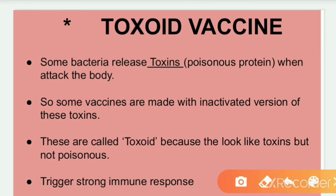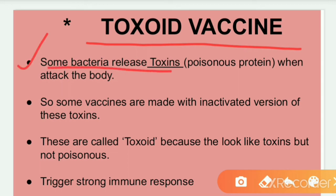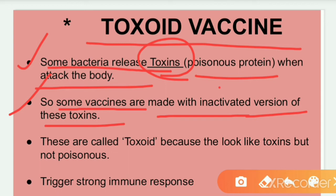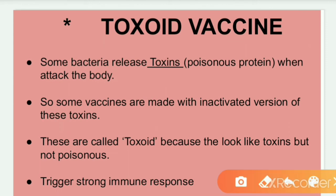Now let's talk about toxoid vaccines. The name suggests it is related to toxins. Some bacteria release toxins — poisonous proteins — when they attack the body. Some vaccines are made with an inactivated version of these toxins. The toxin released by the bacteria is inactivated and that inactivated version of the toxin is used as a vaccine, which is called a toxoid vaccine.